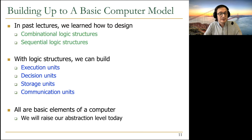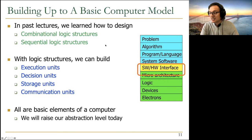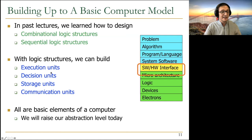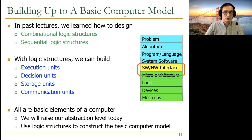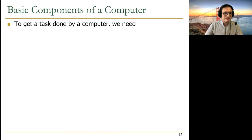We know how to build all of these basic elements of a computer. Today we will raise our abstraction level and combine them. The interface is important because it exposes to the software what we can do underneath — how we can use the underlying logic structures to make something happen that the software wants. Microarchitecture is the design that enables the interface to make it happen using those logic structures. That's why we have these beautiful abstraction layers.